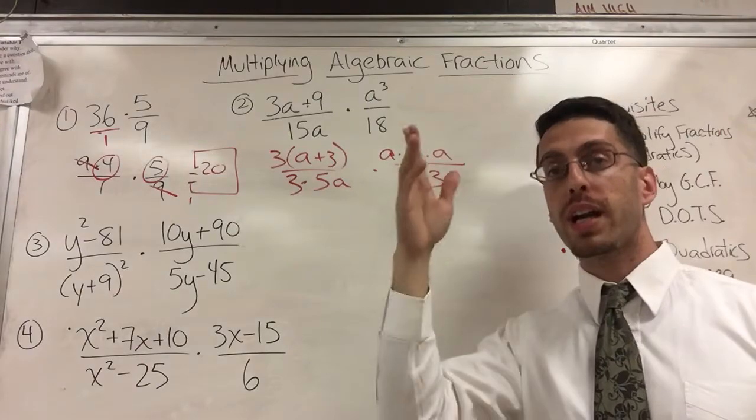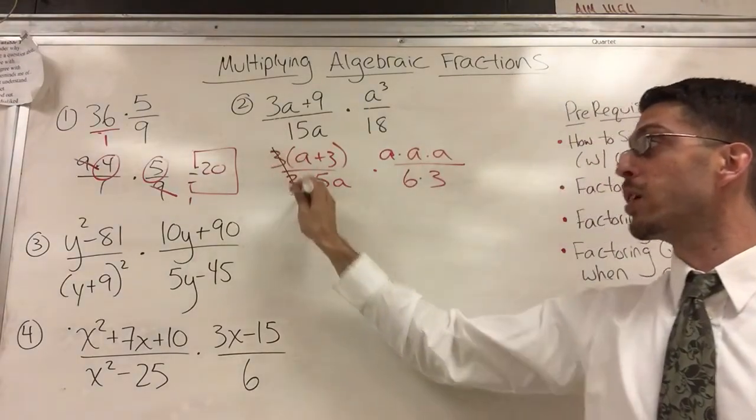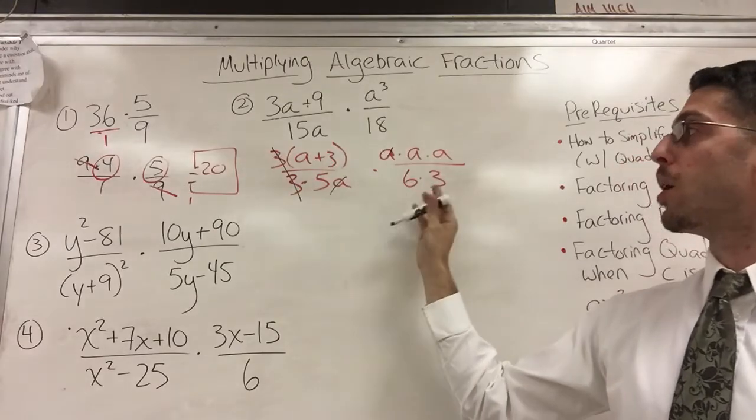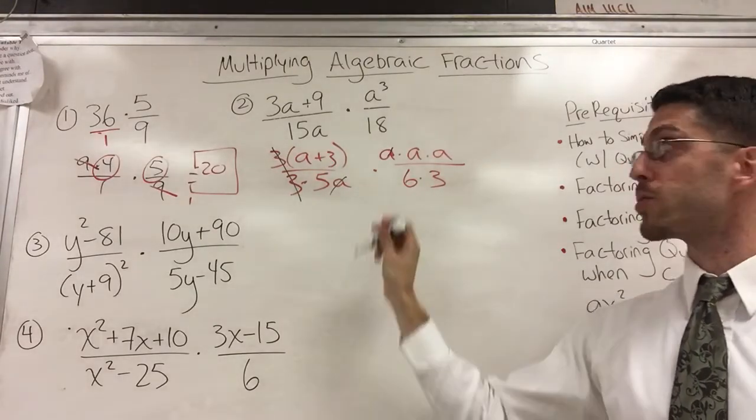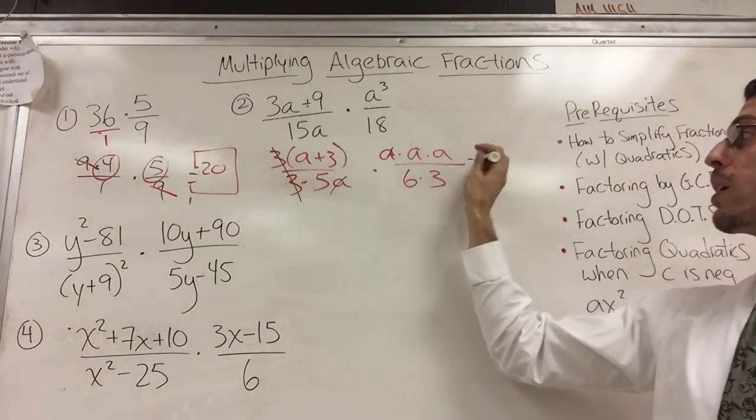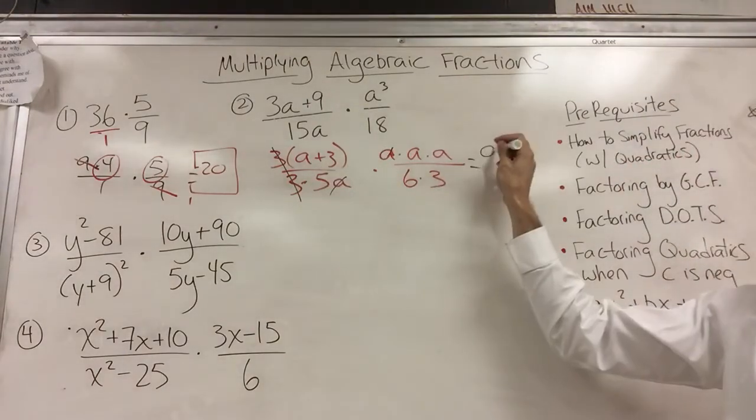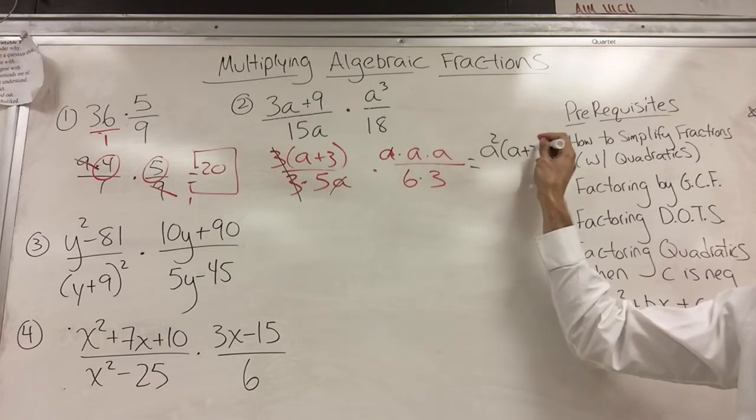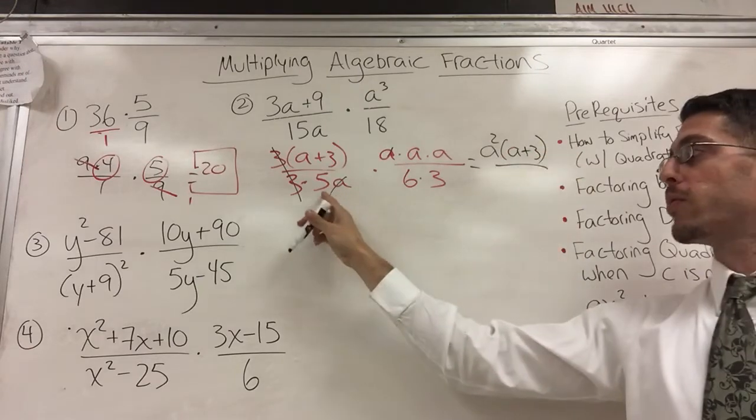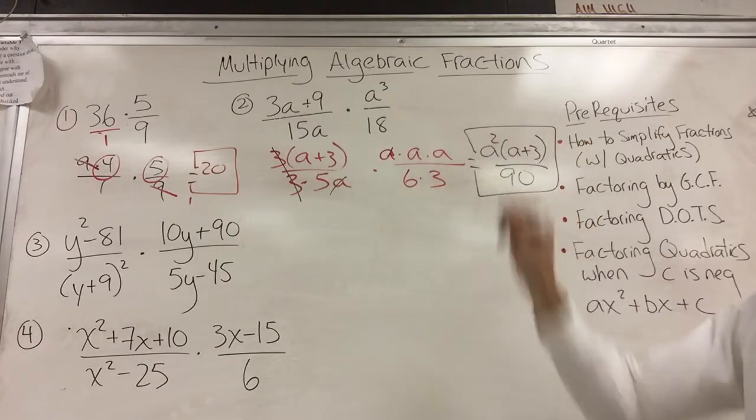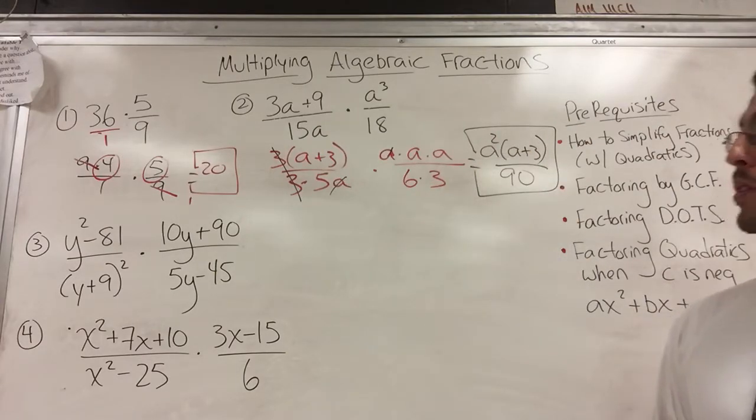now I can start cross-canceling or cancel top and bottom. 3 and 3 will cancel. A and A will cross-cancel. Nothing else cancels. So, whatever's left is what you write. So, I got A times A times that. So, that's A squared times A plus 3. Over. 5 times 6 is 30. Times 3 is 90. And that's as simple as I think I can make it. Alright? So, I'm done.